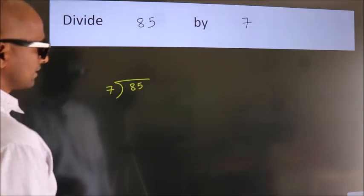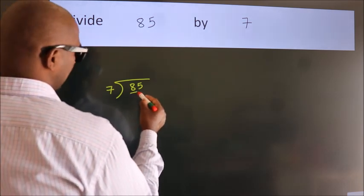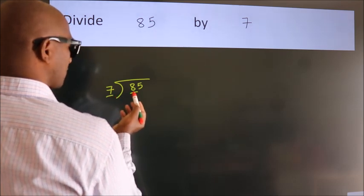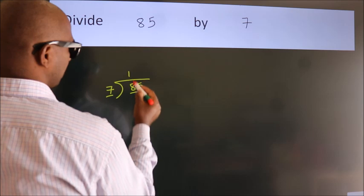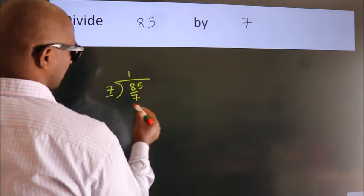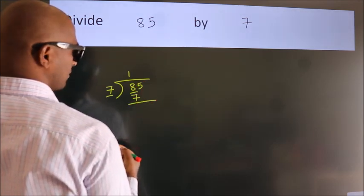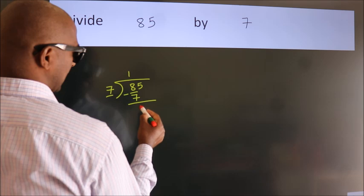Next, here we have 8, here 7. A number close to 8 in the 7 table is 7 once 7. Now we should subtract. We get 1.